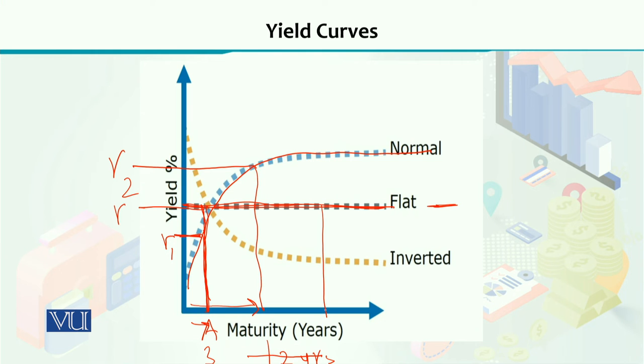Third possibility kya ho sakti hai? Ye abhi aapko inverted yield curve dekhne ko mil raha hai, jisko hum downward sloping yield curve bhi bol sakte hain. Ye Israel ki jo yield curve hai ye recession ko indicate kar rahi hai. Recession ka kya matlab hai ke people are not hopeful about future aur jo short term investment aap kar rahe hain us ke upar to aapko higher interest rate offer ho rahi hai.